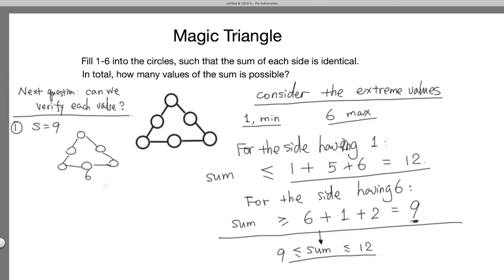Without loss of generality, we can assume the 6 is this circle and it has to be 1 and 2. By the same token, for 1 to get 9 it has to be 5 and 3. The 5 cannot be here because if 5 is here, then 5 plus 2, you have to put another 2 here. So 5 has to be inside here, 3 is here, and this is 4. So for 9, it's possible.